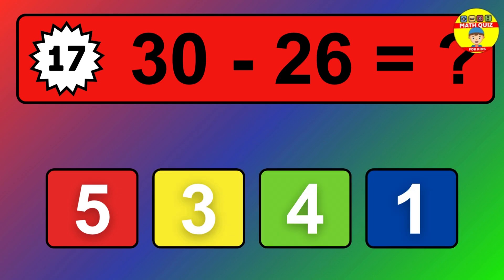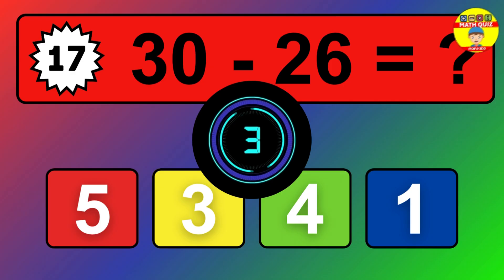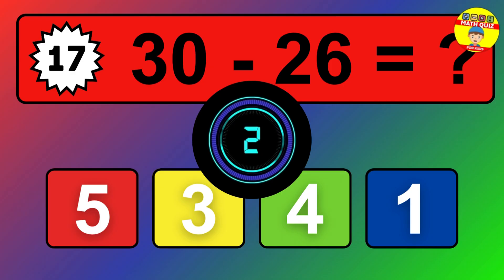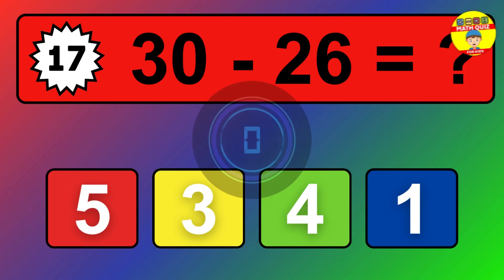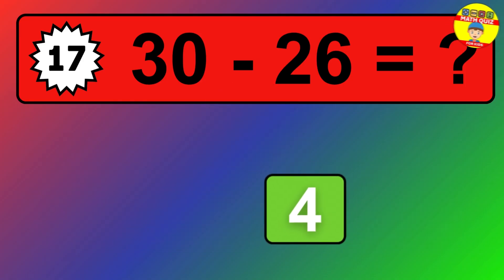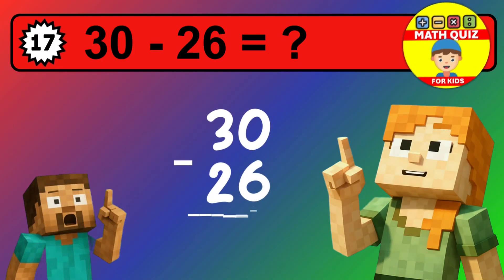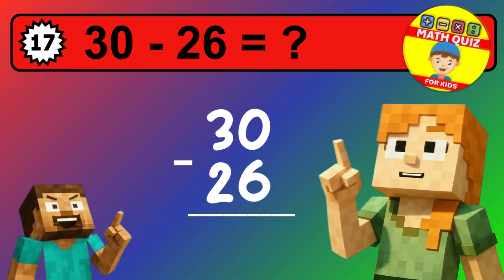Let's solve this step by step. We start with the units. 4 minus 9 is not possible, so we need to regroup. We take one 10 from the tens column. Now we have one tens, and the units become 14. Now we subtract. 14 minus 9 is 5. Then we go to the tens. 1 minus 1 is 0. The final answer is 5.